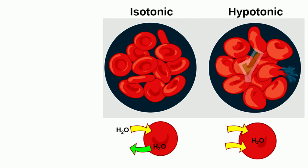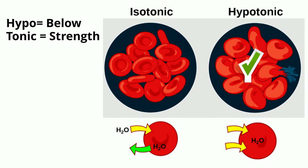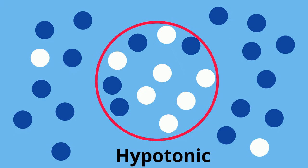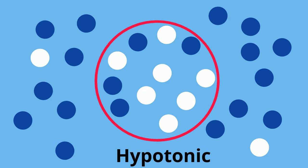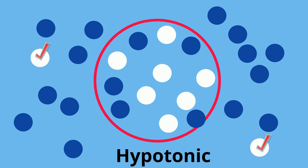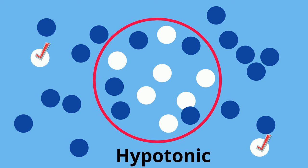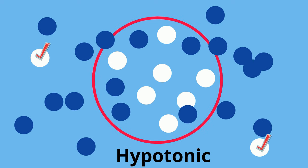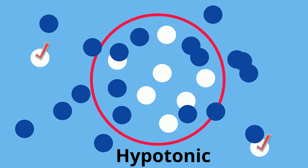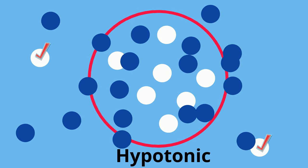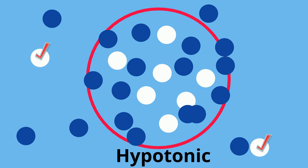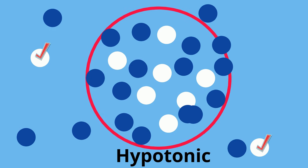Now hypotonic — hypo meaning below, tonic meaning strength. Notice that there is very little solute outside the cell, and a higher concentration of solvent outside the cell. So the solvent flows into the cell — remember high to low — and the cell will expand.